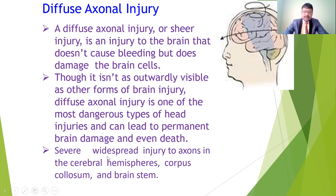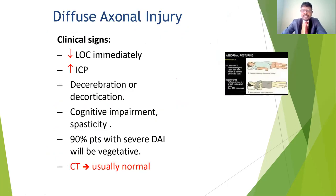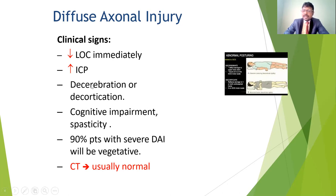Severe widespread injuries to axons in the cerebral hemisphere, corpus callosum, and brainstem most commonly occur. Because of injury in these areas, permanent damage of the axons occurs, and if it progresses, it may lead to death. In diffuse axonal injury, symptoms include decreased level of consciousness — immediately losing consciousness due to lack of oxygen supply (hypoxemia). Increasing intracranial pressure due to swelling inside the brain also occurs.